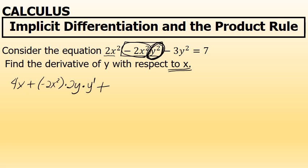The second part of the product rule states that I should take the second factor, y squared, unchanged, times the derivative of the first factor. The first factor was negative 2x squared, and its derivative is negative 4x. These last two terms are the derivative of negative 2x squared times y squared, found using the product rule.